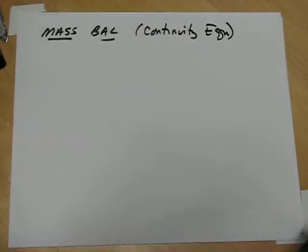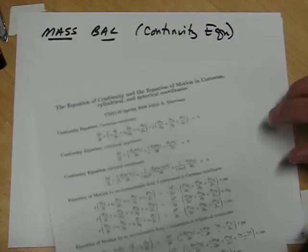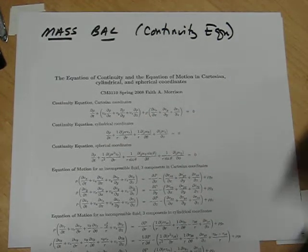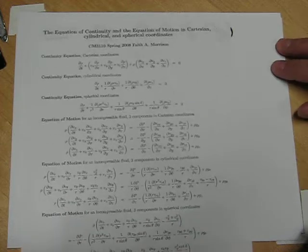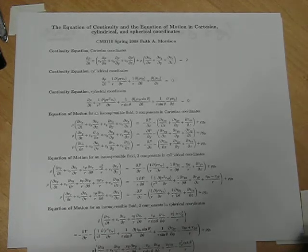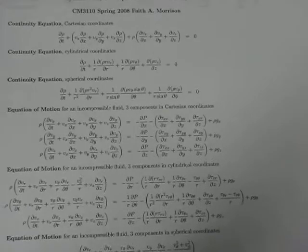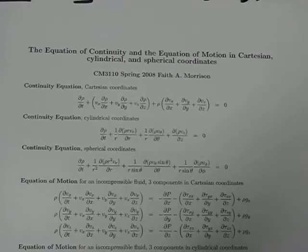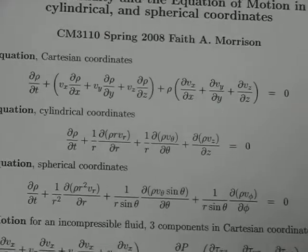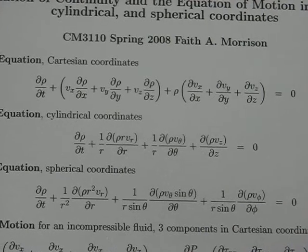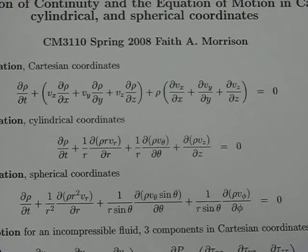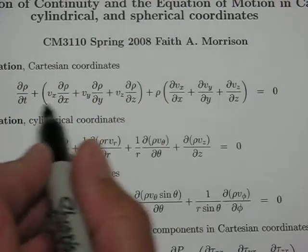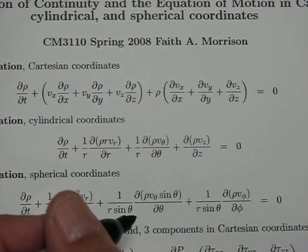So turning now to the continuity equation, in our Cartesian coordinates, it's listed here. Let me zoom in on that a little bit. So here's the continuity equation in Cartesian coordinates, x, y, z coordinates.